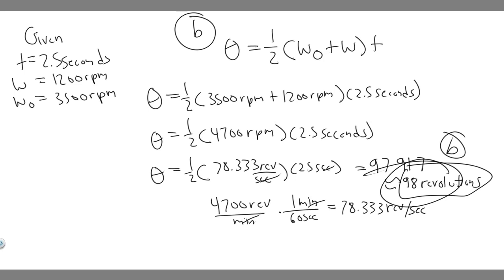So to summarize: your answer to part A was minus 96 radians per second squared for angular acceleration, and your answer to part B was 98 revolutions. Hopefully you found this useful.